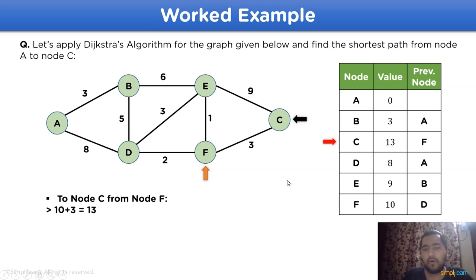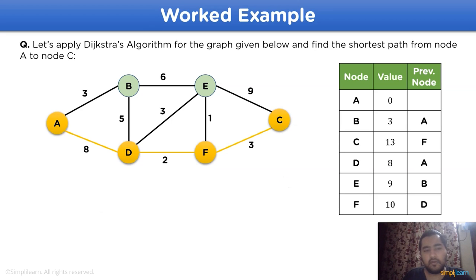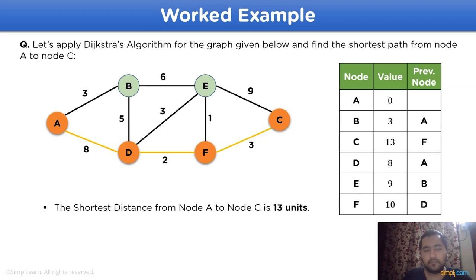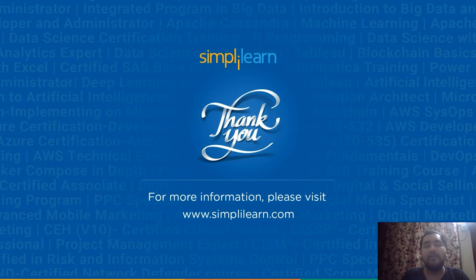With the completion of all nodes in the given graph, we can deduce the shortest path from node a to node c: from node a to node d, node d to node f, and node f to node c, with a total value of 13. With this, we have covered all the parts regarding the functioning and working steps involved in Dijkstra's algorithm. If you have any questions, you can ask them in the comment section. Thank you for watching.